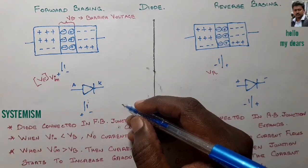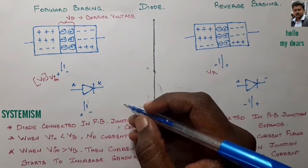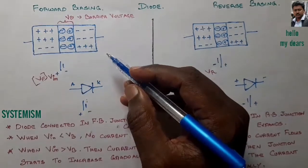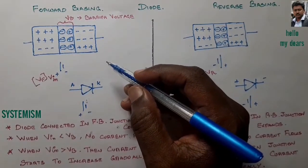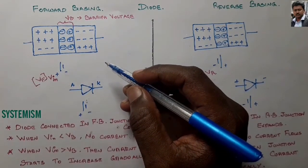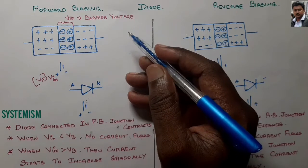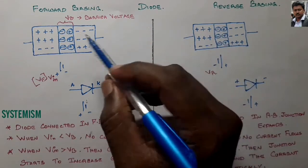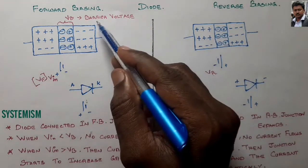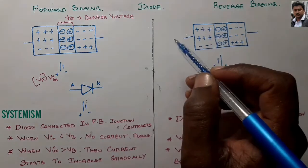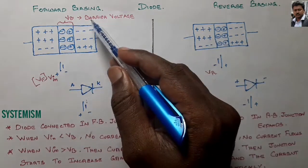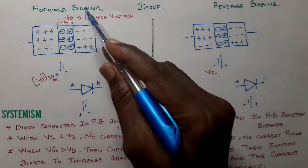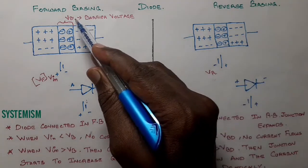Hello everyone, today we are going to see about the diode's forward biasing and reverse biasing. Previously we learned what a diode is and how it is created. Now we need to know about the different biasing techniques — one is forward bias and another one is reverse bias.